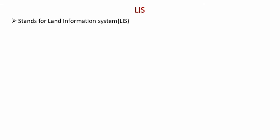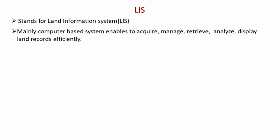LIS stands for Land Information System. With the improvement of modern information and communication technology, every sector has been enhanced, including land management. LIS is mainly a computer-based system that enables users to acquire, manage, retrieve, analyze, and display land records effectively, efficiently, and economically — what I call the 3E approach.